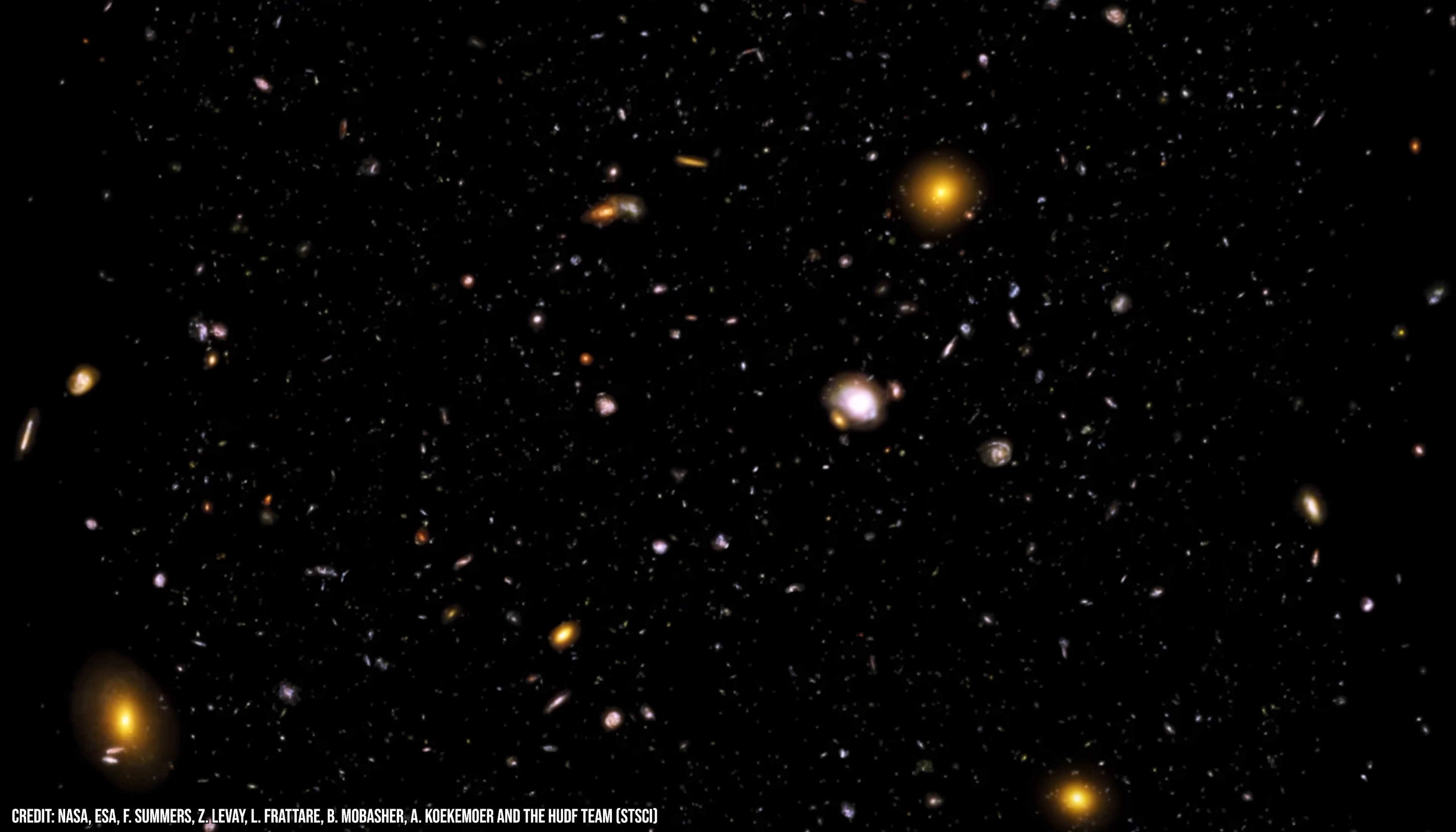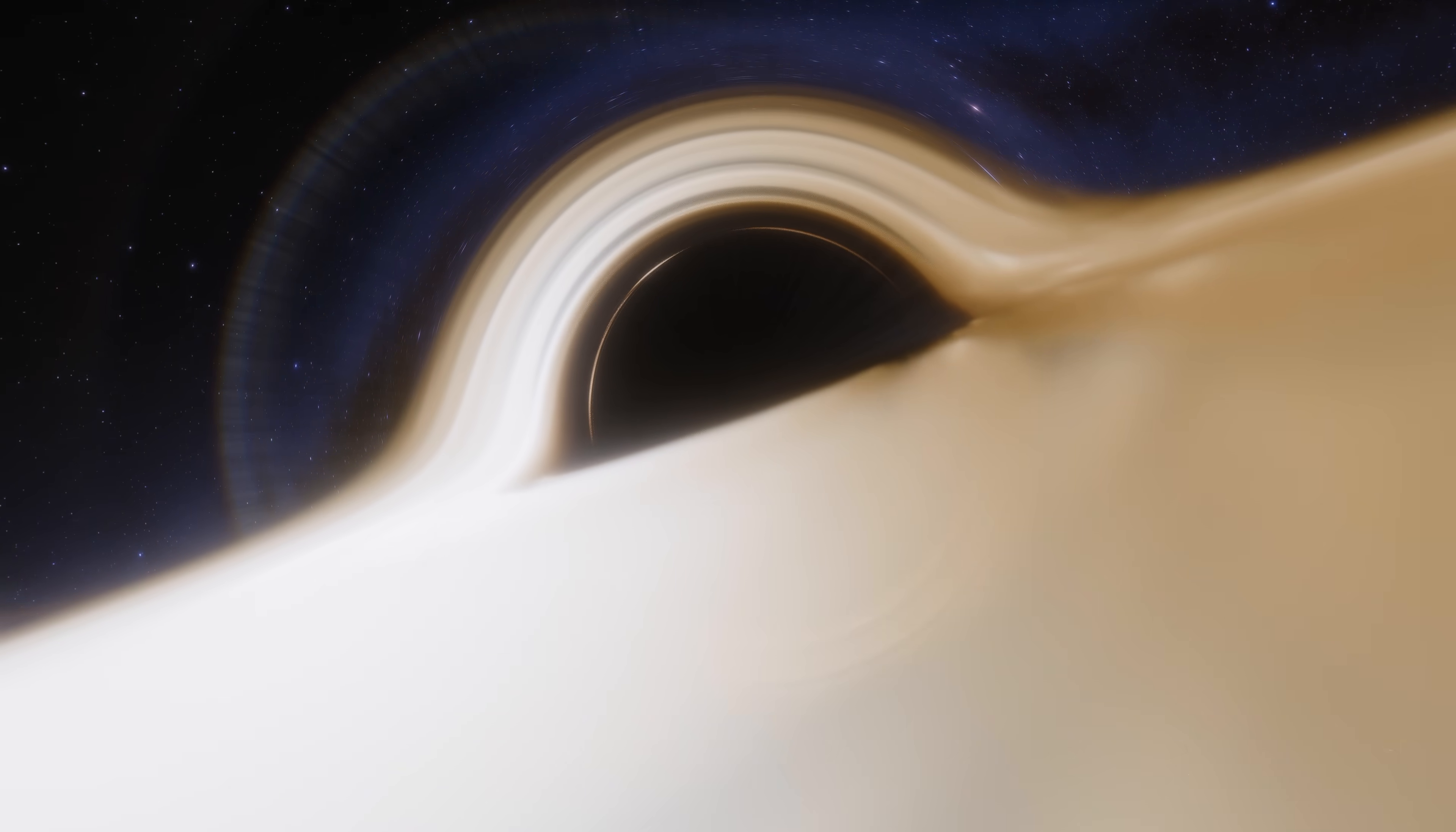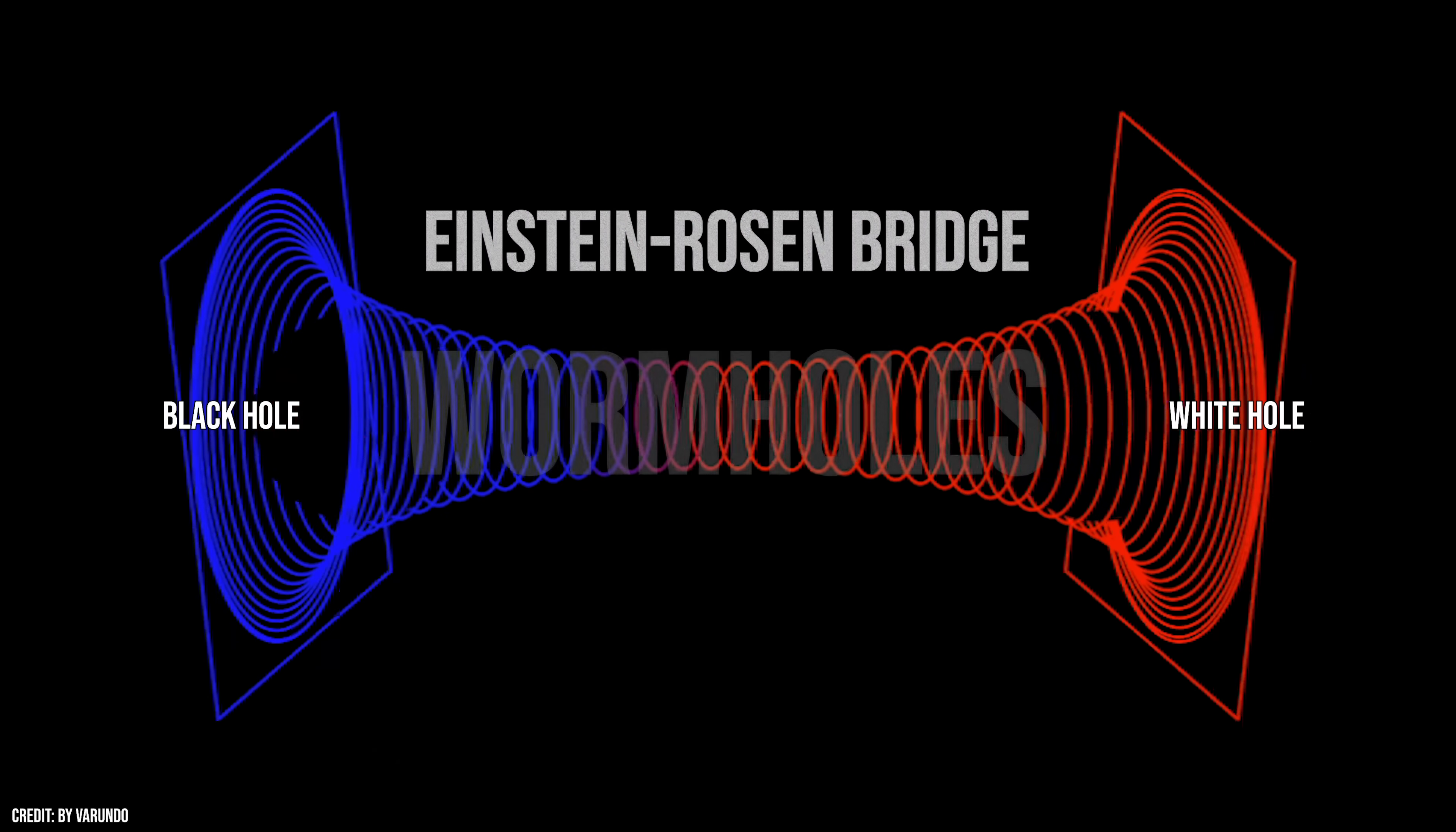Our universe. It's still possible that white holes exist in another universe, one where time runs in the opposite direction. What's more, Einstein's equations allow a black hole to be connected to a white hole. Enter a black hole in our universe and you could be spat out of a white hole in another. Officially, the connection between a black hole and a white hole is known as an Einstein-Rosen bridge. Yet these tunnels have a more colloquial name, wormholes.